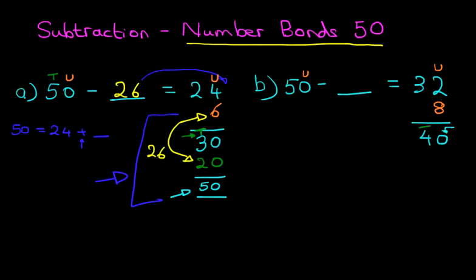Now we're going to look at the tens. We've got 4 tens over here. 50 has got 5 tens, so therefore we have to add 10. 4 plus 1 is 5.